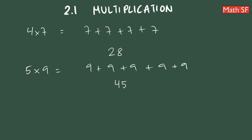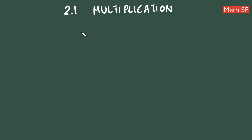To memorize the times table, we must understand that multiplication is commutative. To be commutative means that 2 times 3 is the same as 3 times 2. This will help shorten the list of multiplication facts you need to memorize.